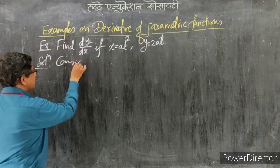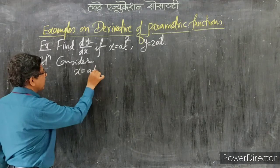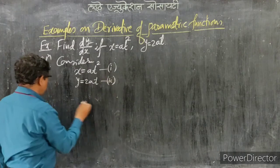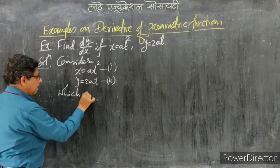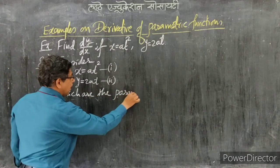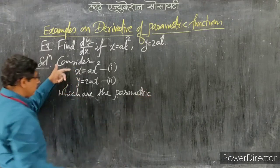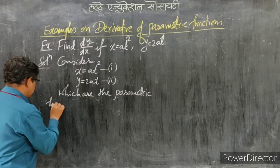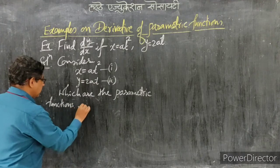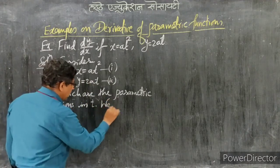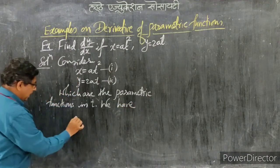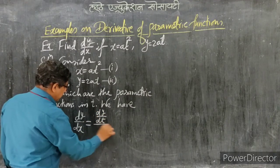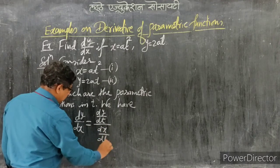For the solution, we write: x = at² — call this equation 1 — and y = 2at — call this equation 2. These are parametric functions, because both variables x and y depend on the third variable t. We have the formula for derivative of parametric functions: dy/dx = (dy/dt) / (dx/dt). Call this equation 3. We need to calculate dy/dt and dx/dt, then use those values in equation 3.